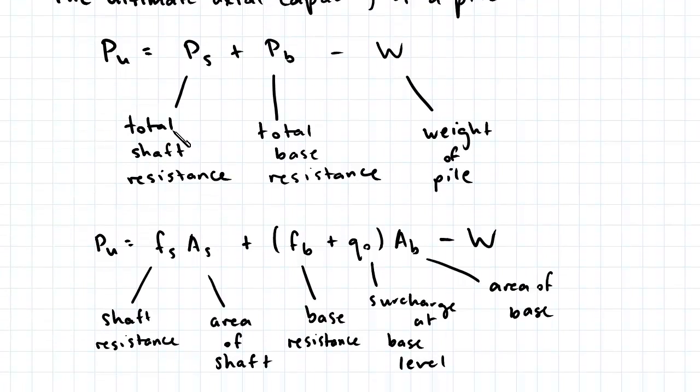So the total shaft resistance can be expanded into the shaft resistance multiplied by the area of the shaft. The total base resistance can be expanded into base resistance plus the surcharge at base level multiplied by the area of the base.